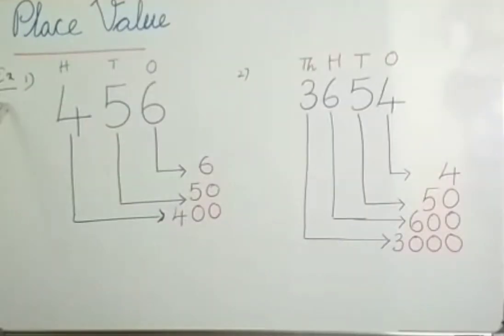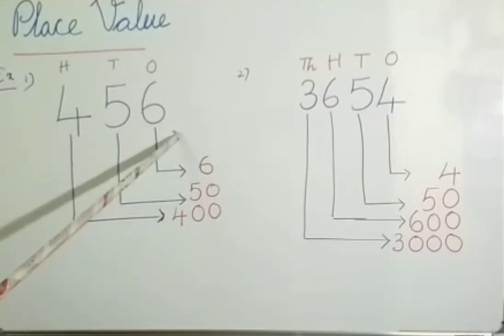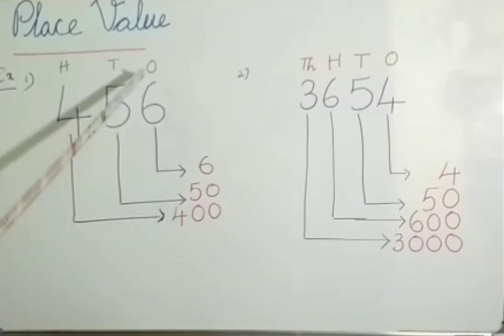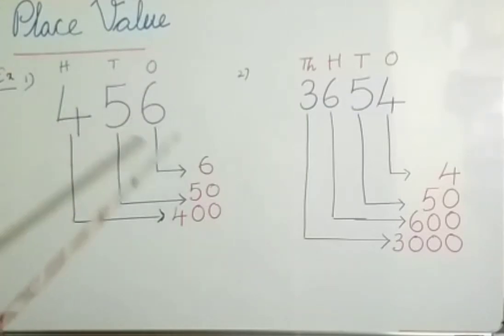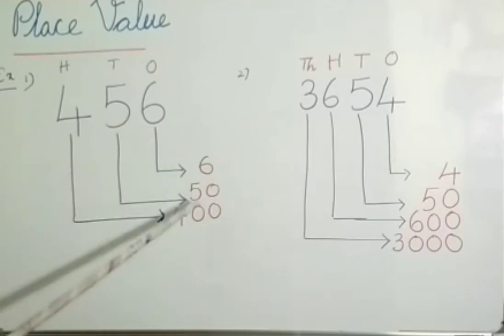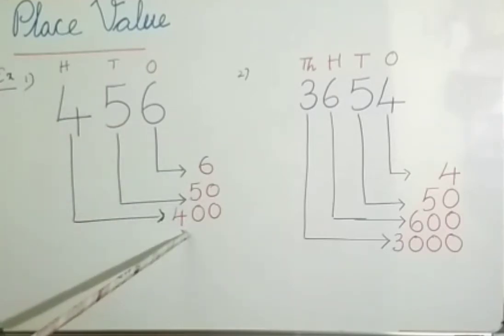Here are some examples. The number is 456. The place value of 6 is 6, since 6 is at the 1's place. The place value of 5 is 50. The place value of 4 is 400.